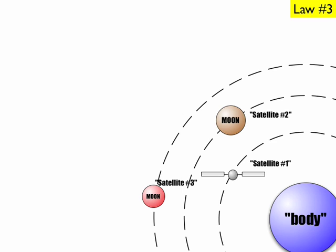Every planet has its own unique constant. So, you cannot compare the Earth and the Sun if they're both the body, because they have two different constants. Whatever orbits the Earth has its constant. Whatever orbits the Sun has its constant.